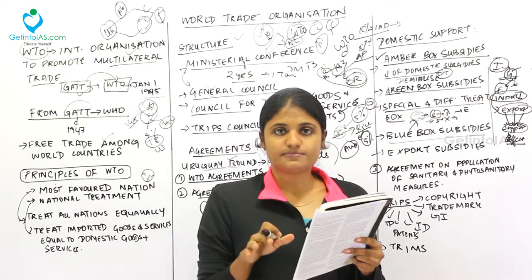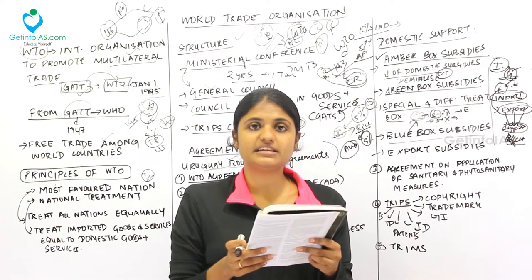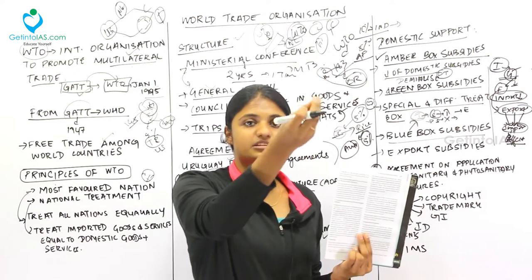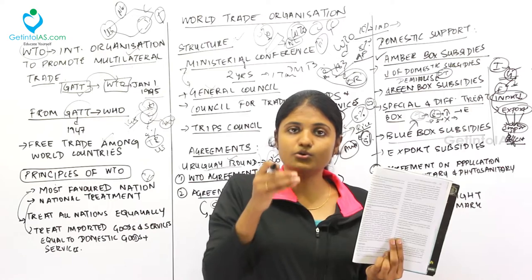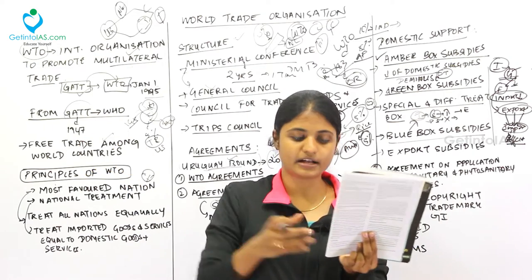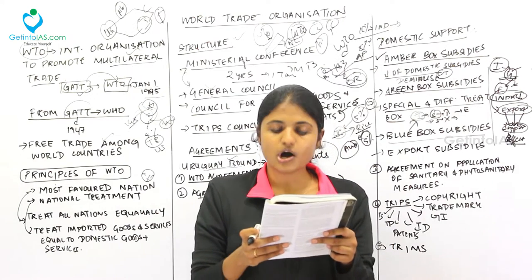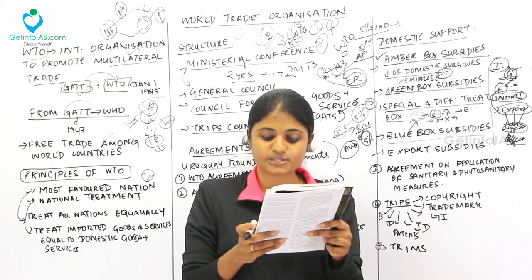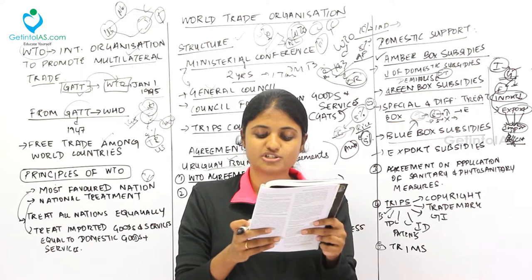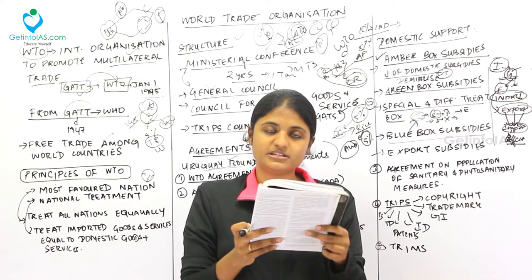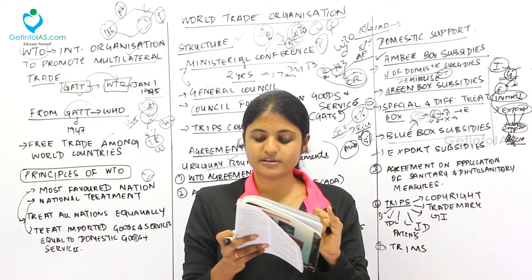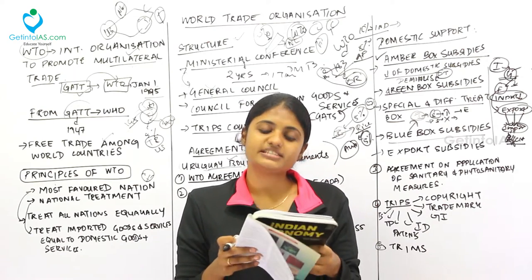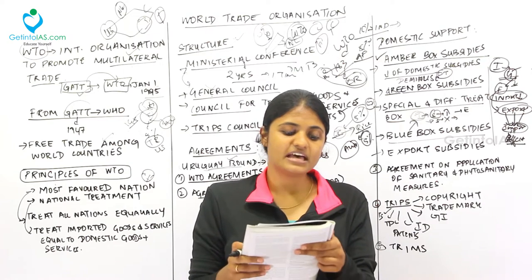Export subsidies are subsidies that subsidize exports. If a farmer or producer receives a government subsidy, their cost of production comes down, allowing them to export more to foreign markets. These are direct subsidies given by the government or agencies in cash or kind to producers of agricultural products against export performance, including transport subsidies.